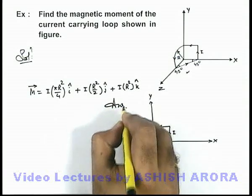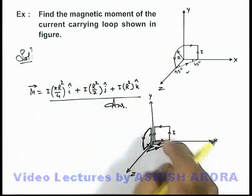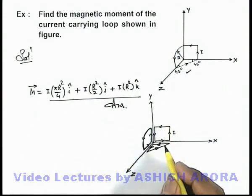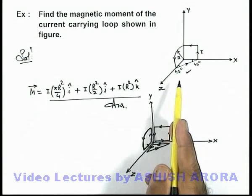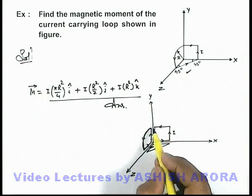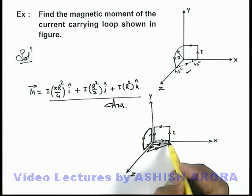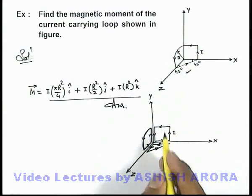This will be the answer to this problem, that is the total magnetic moment of this 3-dimensional loop which we have calculated by splitting it into three independent loops carrying current in similar directions.